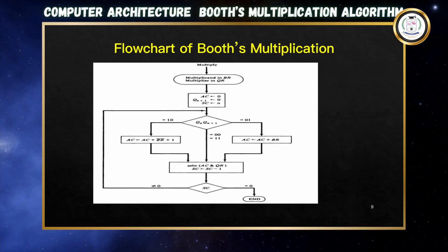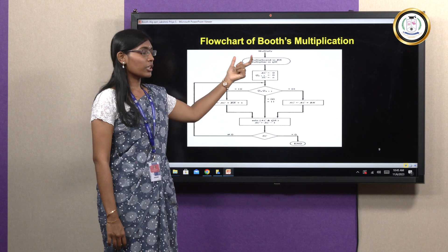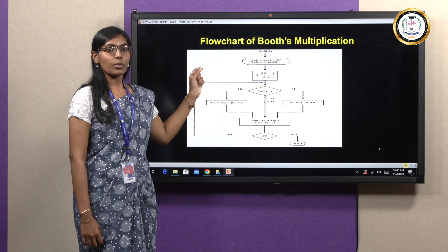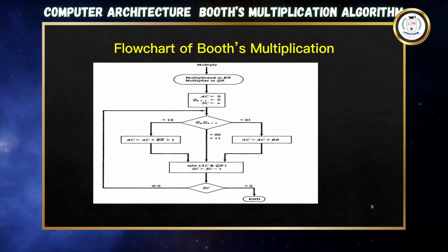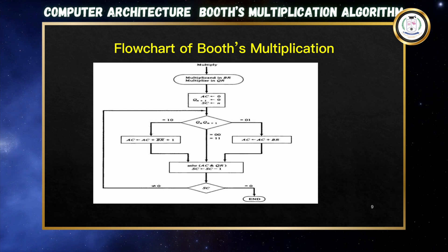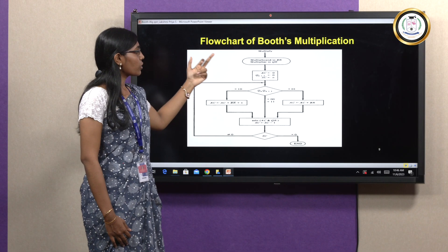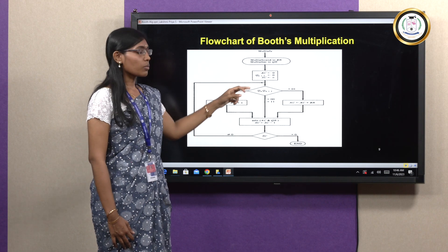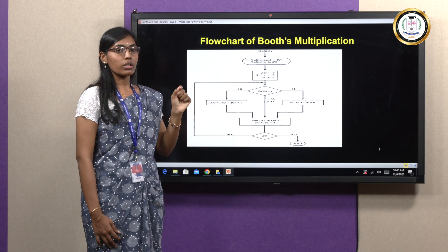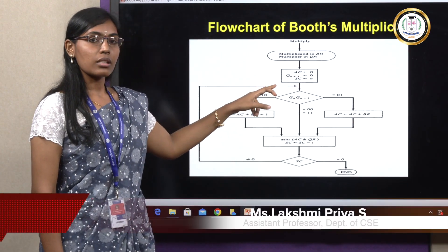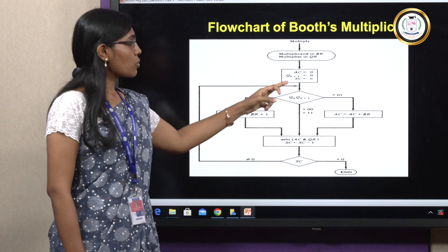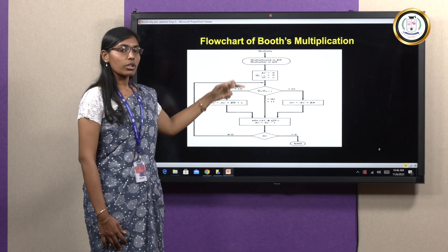For Booth's multiplication, following the flowchart, we start by loading two values: the multiplicand into the BR register and the multiplier into the QR register. The AC register is initially assigned all zeros, QN+1 is initially assigned 0, and the sequence counter SC is set to n — the number of bits in QR and BR.